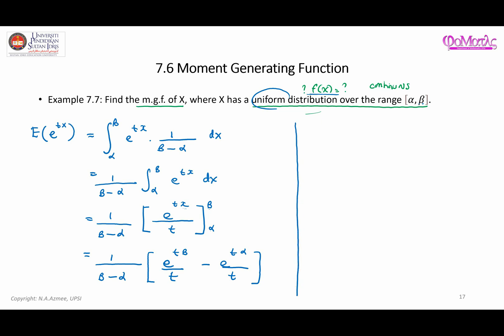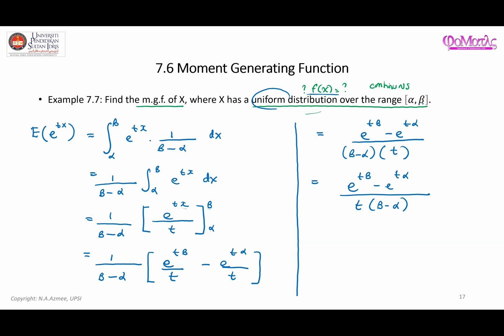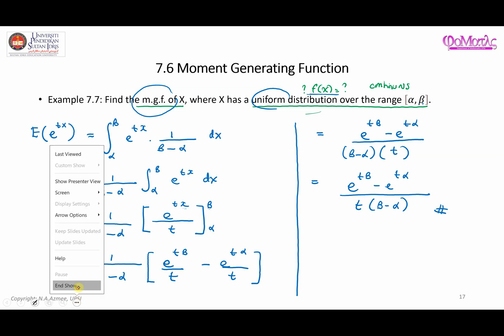Simplifying, we combine over the same denominator: the result is e to the t·beta minus e to the t·alpha, all over t times (beta minus alpha). So the moment generating function of x, where x has a uniform distribution over alpha to beta, is (e^(t·beta) − e^(t·alpha)) / (t(beta − alpha)).